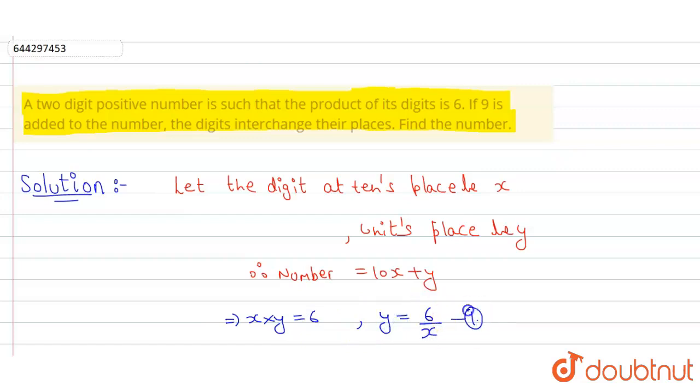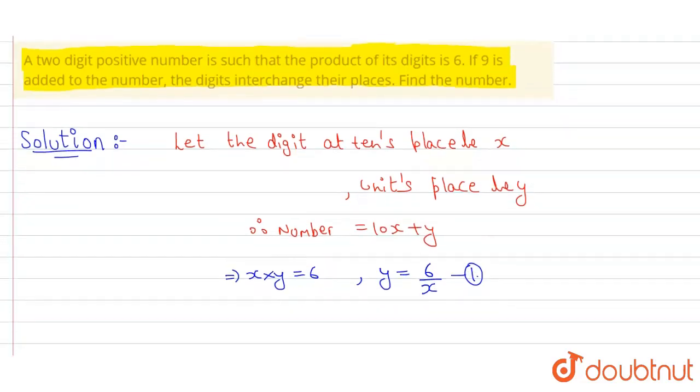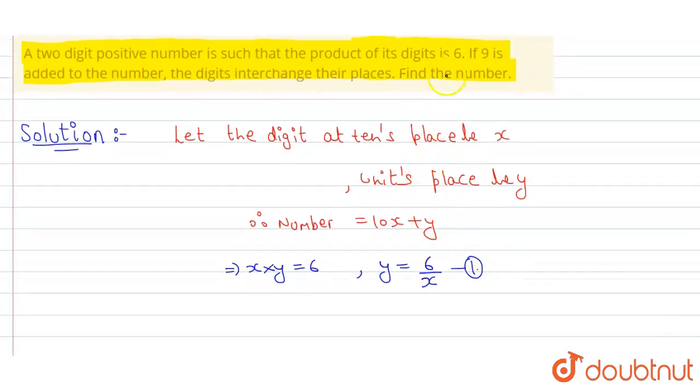It is also given that if 9 is added to the number, which is 10x plus y, then the digits will interchange their places. That means 10x plus y plus 9 equals 10y plus x.